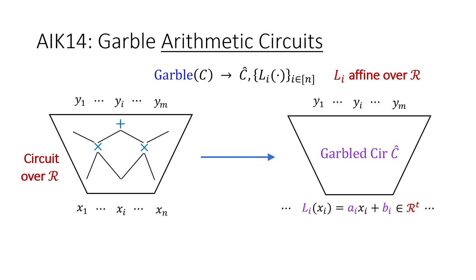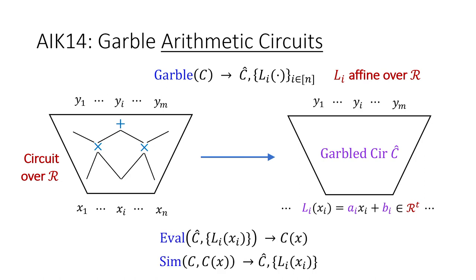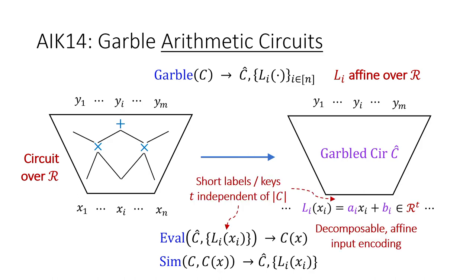The beautiful work of Applebaum, Ishai, and Kushilevitz from 2014 defines garbling for arithmetic circuits, where the gates are multiplication and addition over elements from some ring R. This shows up naturally in scientific computation, machine learning, and cryptosystems. In their definition, the garbler computes C-hat as well as N alpha and label functions instead of key pairs in the Boolean case, and the evaluator can compute C of X and nothing more.